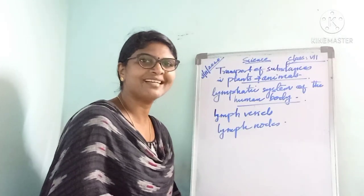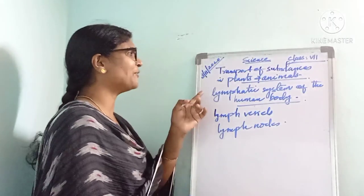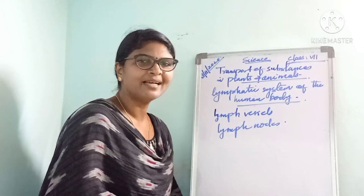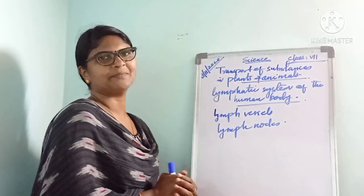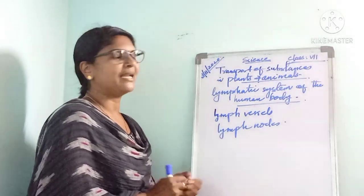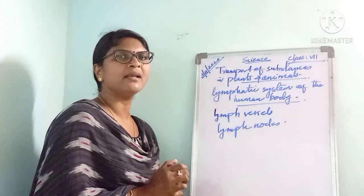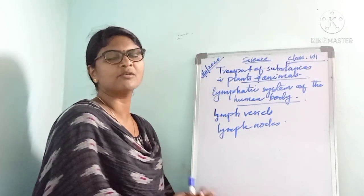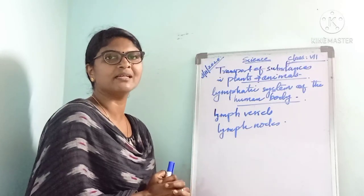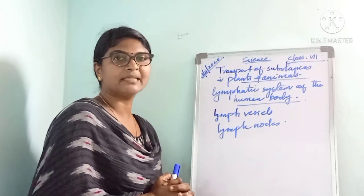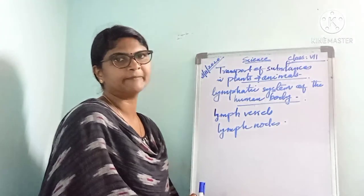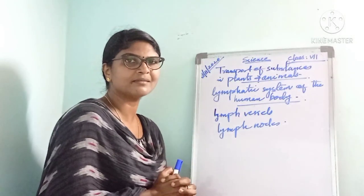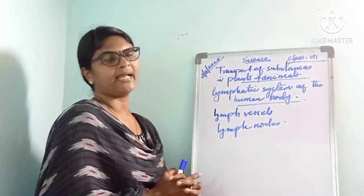Good afternoon dear children. Let us continue the lesson on transport of substances in plants and animals. Last class we discussed about the structure and working of the heart, and also we learned the composition of blood.